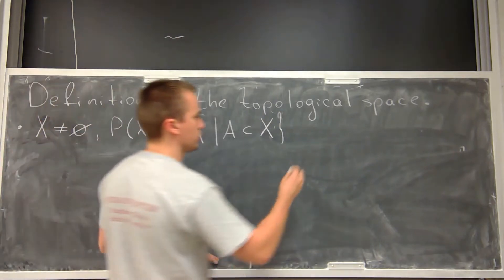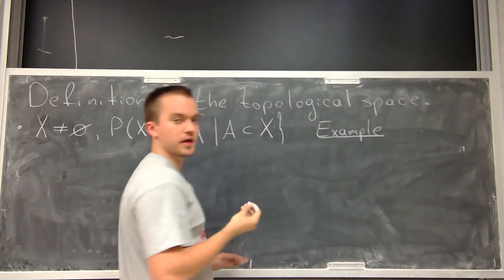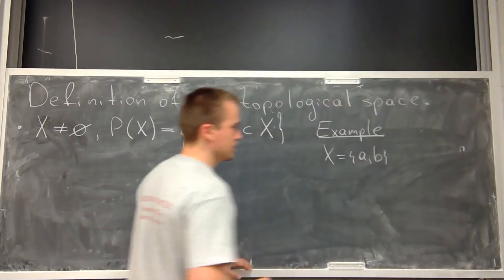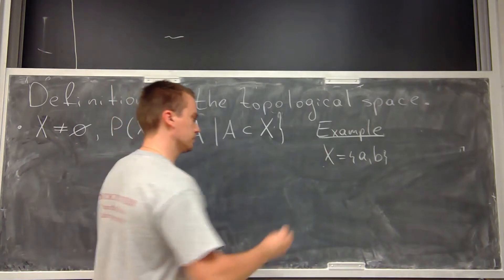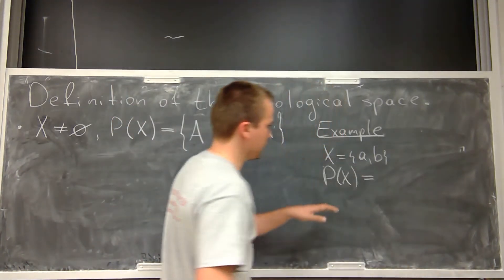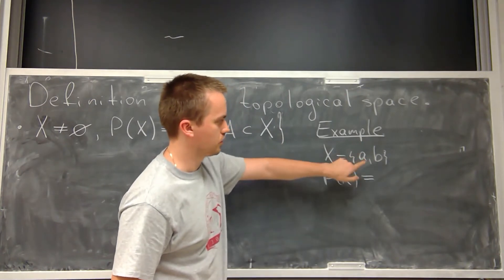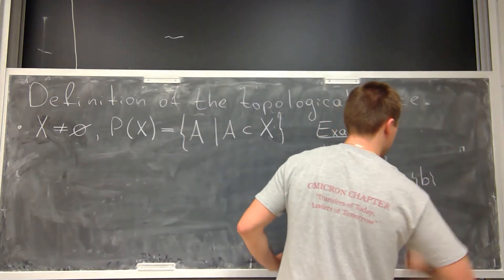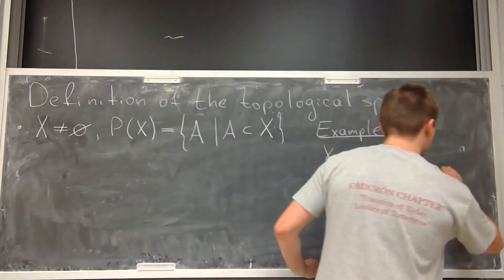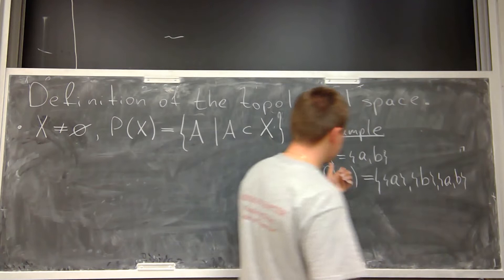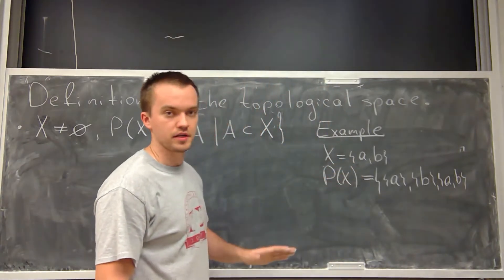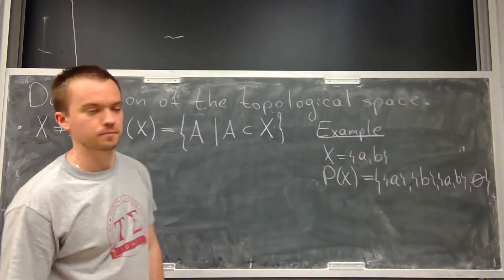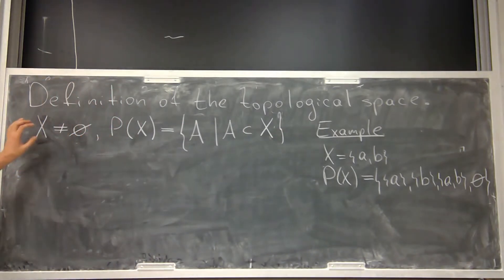Let me give you a short example. Say we have a set X with two elements. We can find P(X): we have two single-element subsets, the subset containing both elements, and also the empty set, since the empty set is a subset of any set. So this is how we find the power set — for any set we can find its power set.